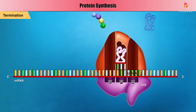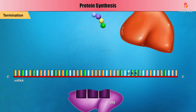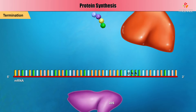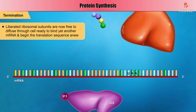Finally, another factor called ribosome recycling factor, or RRF, along with EFG, binds at the A site, and the accompanying GTP hydrolysis undocks the two ribosomal subunits. IF3 then reassociates with the 30S subunit, preventing the 50S and 30S subunits from coming together again. The liberated ribosomal subunits are now free to diffuse through the cell, ready to bind yet another mRNA and begin the translation sequence anew.